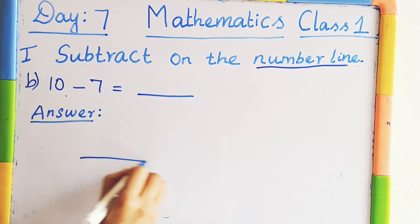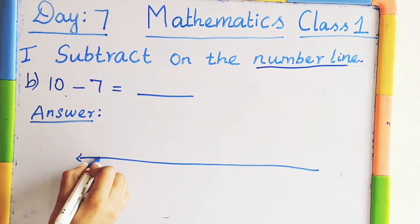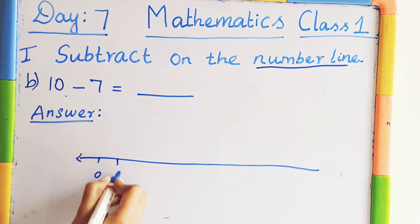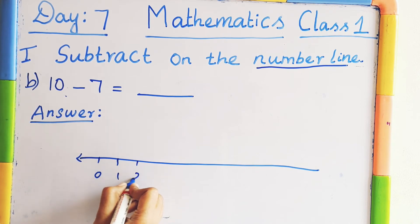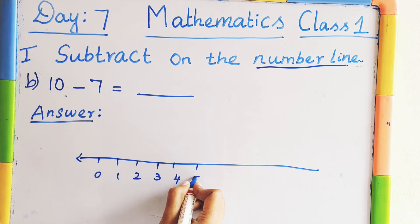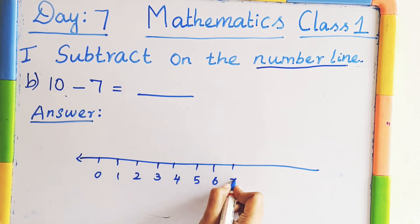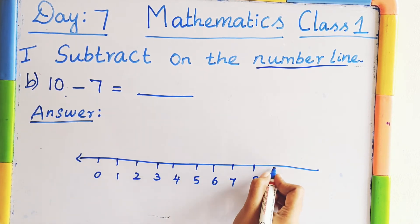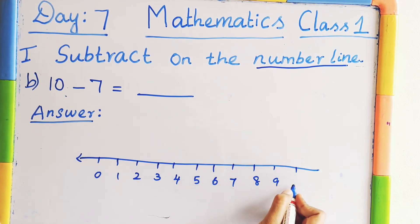Draw a line. Write the number from 0 to 10. [Drawing and labeling: 0, 1, 2, 3, 4, 5, 6, 7, 8, 9, 10.]